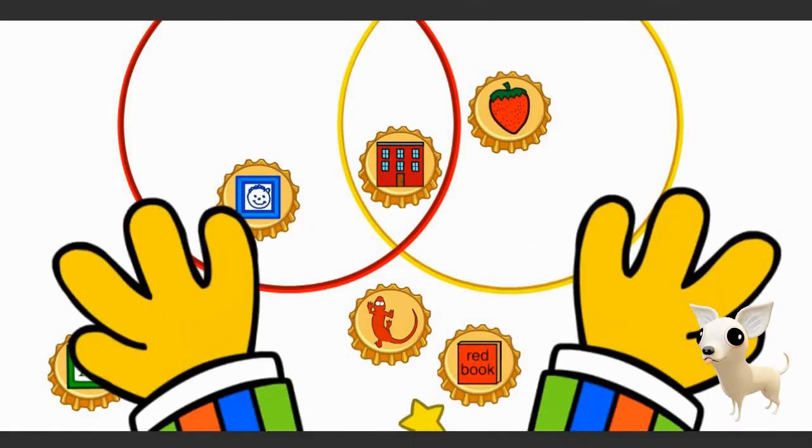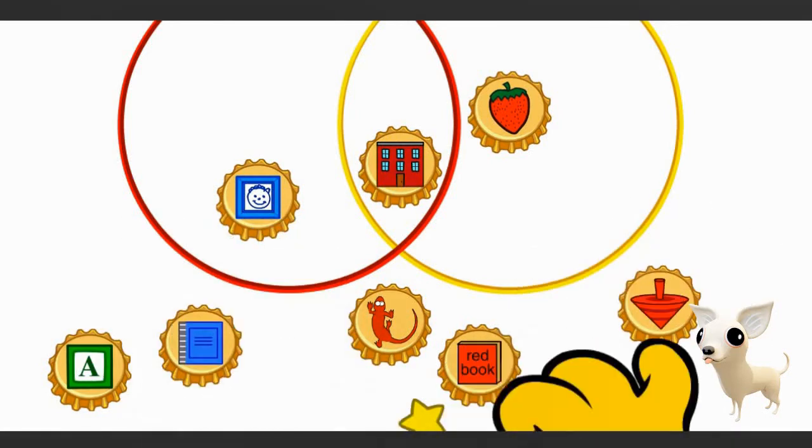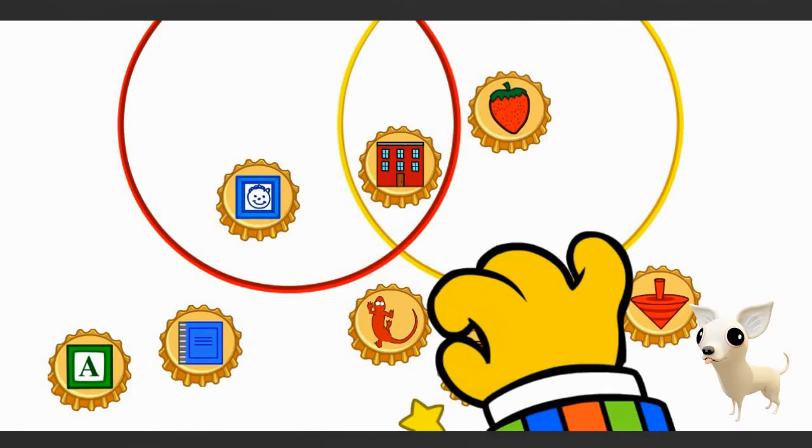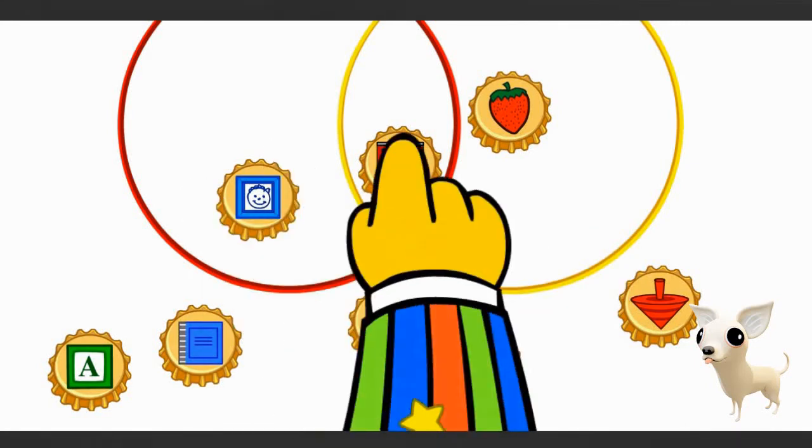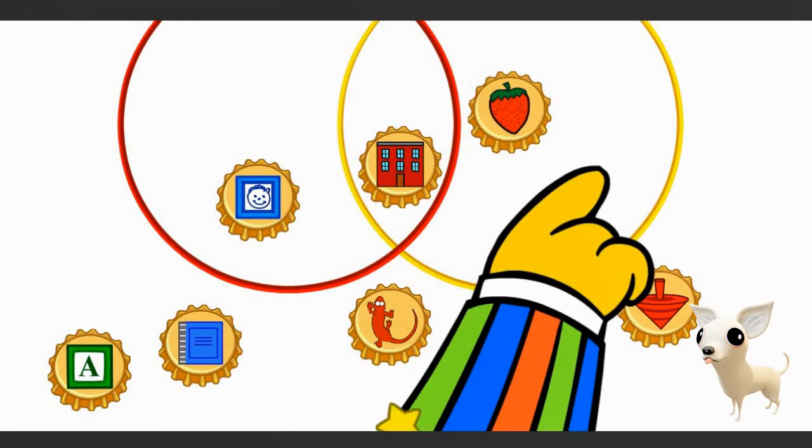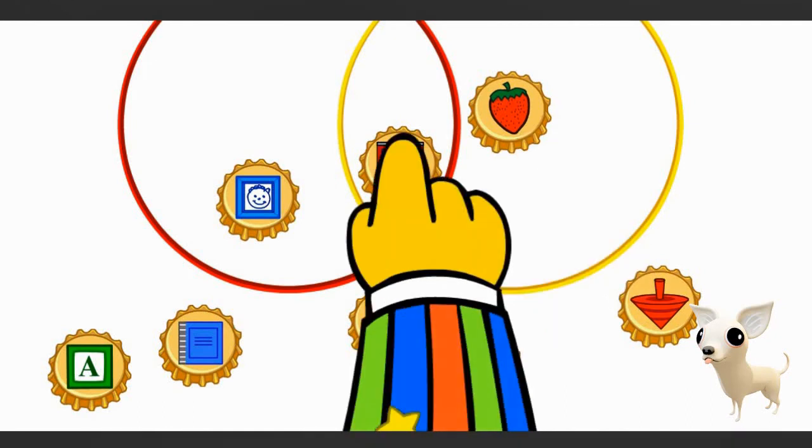Well, let's see if we can sort these bottle caps. Let's find a good way to sort the bottle caps. Let's put squares here, and red things here, and red squares here.